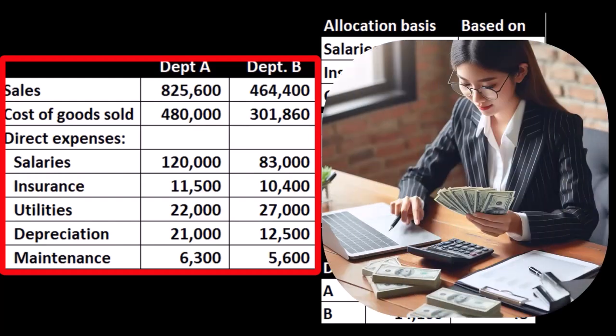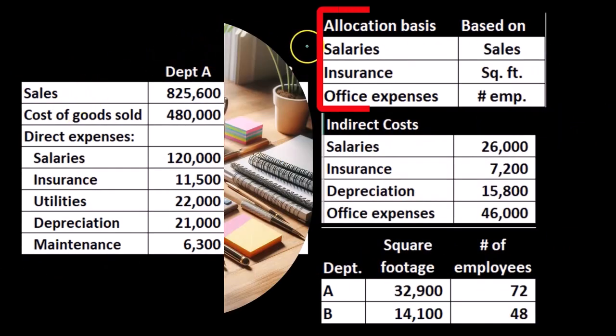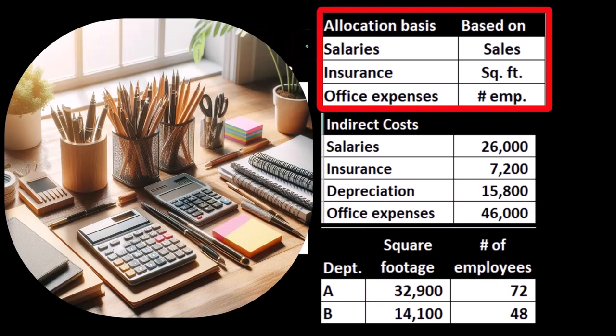They're fairly easy for us to apply to the department. We are then going to be considering those items that we cannot apply to the department as easily, because they are going to be used by multiple departments. Then we're going to have our allocation basis — these are the basis that we use for indirect expenses.